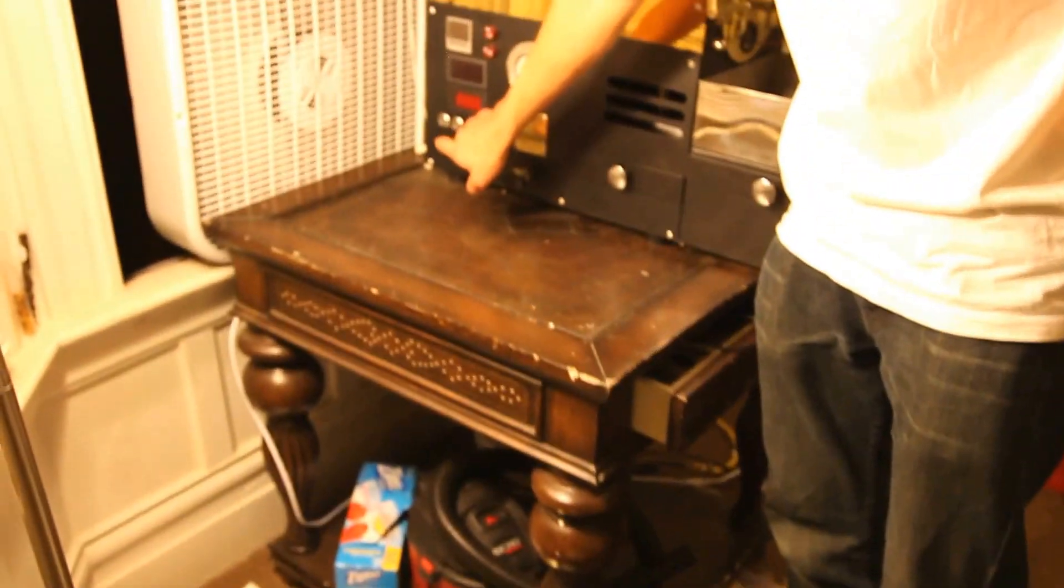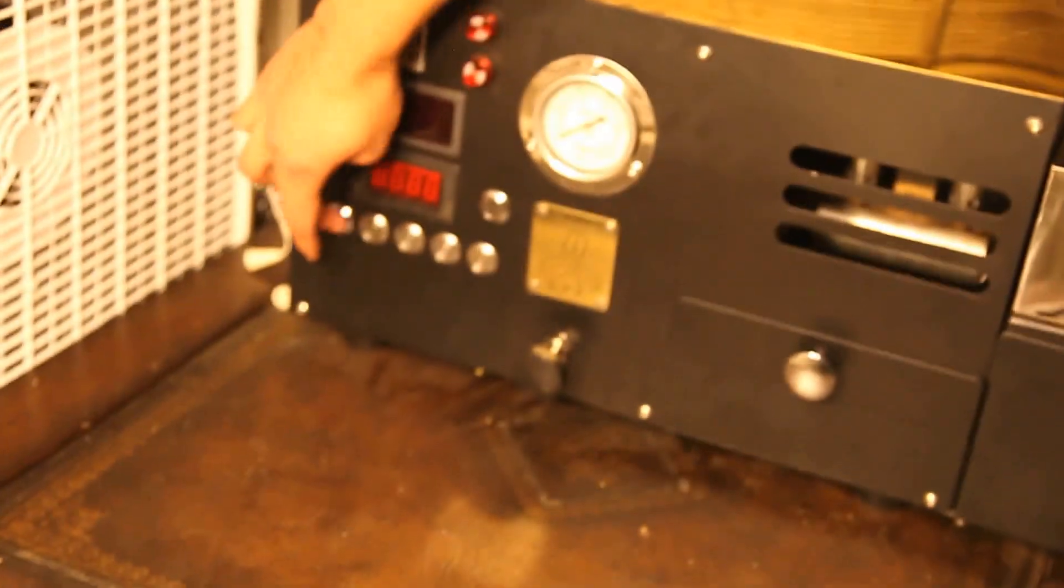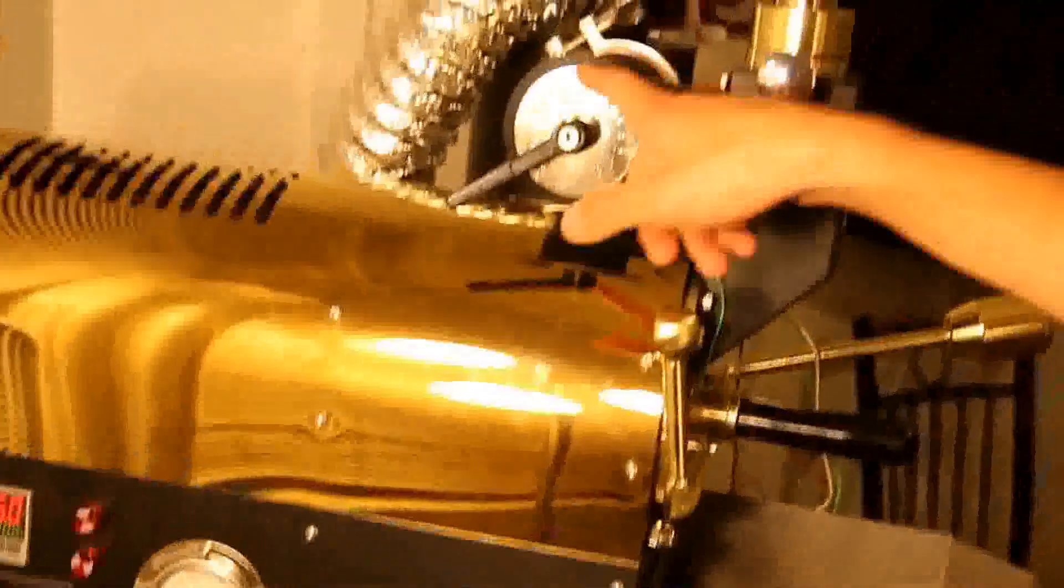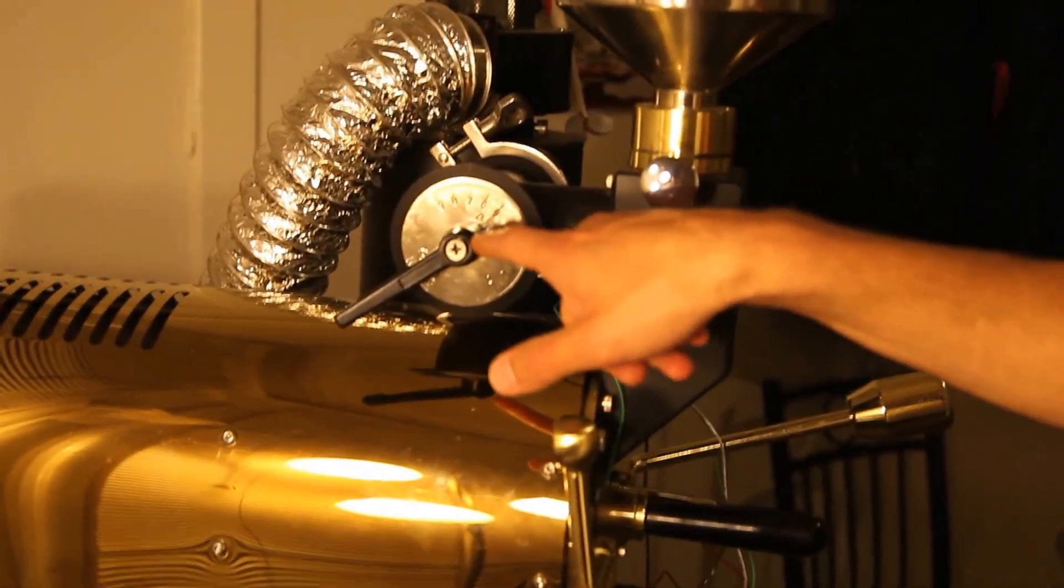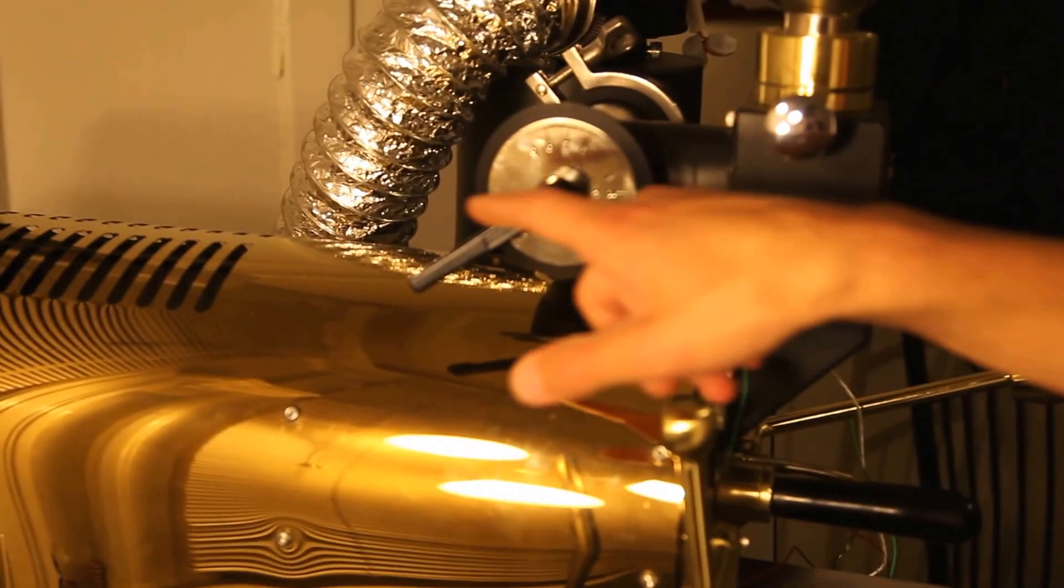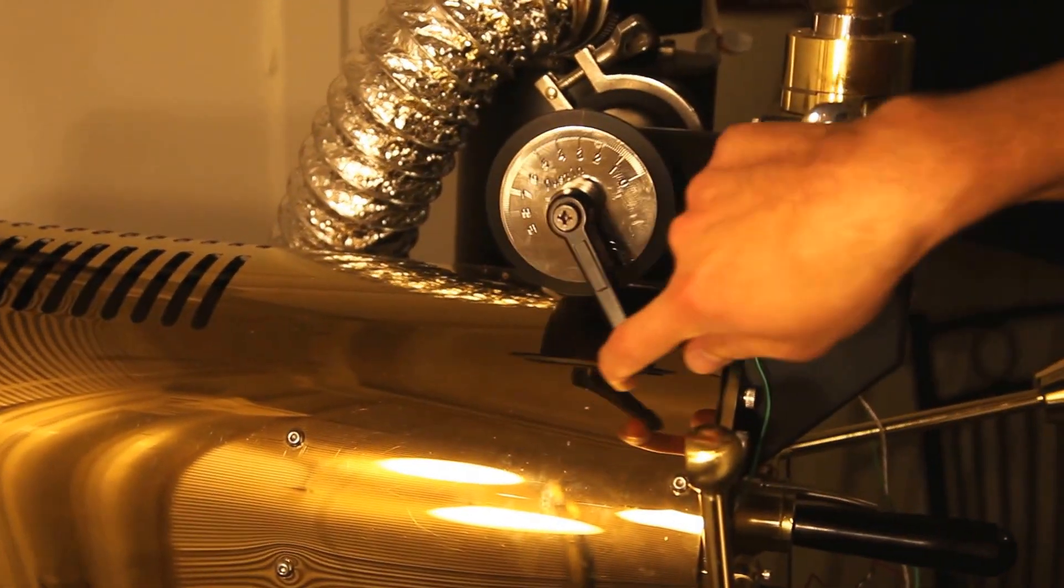Next thing I'm going to do is turn on the drum and the fan. This is going to be one button on the new roaster; on my roaster it's two. The fan is set high from the last roast. I'm going to turn that down because while it's trying to ignite, it needs not a lot of airflow through there. This is just a small spark, so I'll turn that down to two.